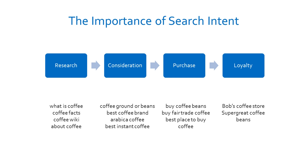So it's very important that you try and get in the mind of the user who is eventually potentially going to be your customer, to try and understand what the process is that they take before they end up buying anything from you. This is the consumer thinking process when it comes to interacting with search engines. The first thing they'll search about any product — we're using coffee as an example — is, if they don't know what it is, they might search 'what is this product,' 'what is coffee,' 'coffee facts,' etc.